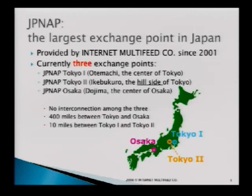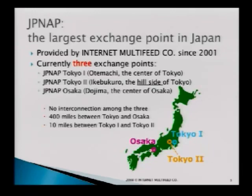Tokyo and Osaka are approximately 400 miles away, so if there is a big earthquake in the Tokyo area, providers can back up their traffic to the Osaka area. We also built one more site in Tokyo — Tokyo 2. Tokyo 1 and Tokyo 2 are 10 miles away, and as you know, internet traffic in Japan is concentrated in the Tokyo area, so we hedge the risk of terror or power failure by having Tokyo 2.